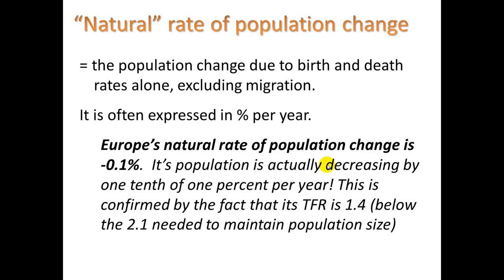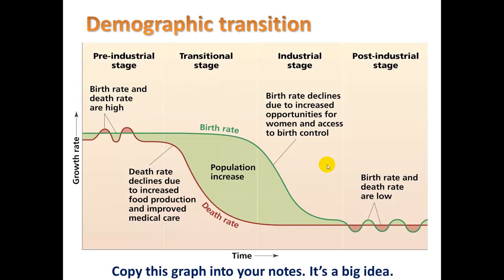This model is referred to a lot in population studies — the demographic transition. You should copy this into your notes; it's a big idea and we'll be discussing it more tomorrow. It can also help explain different shaped age structure diagrams. There are four stages: the pre-industrial stage, transitional stage, industrial stage, and post-industrial stage.